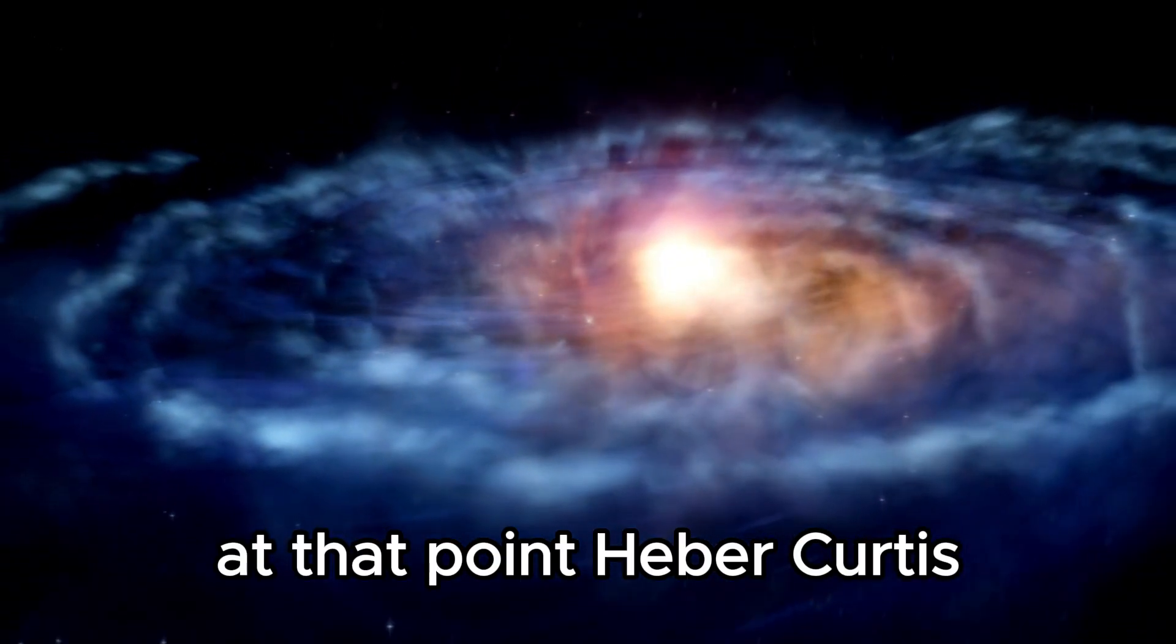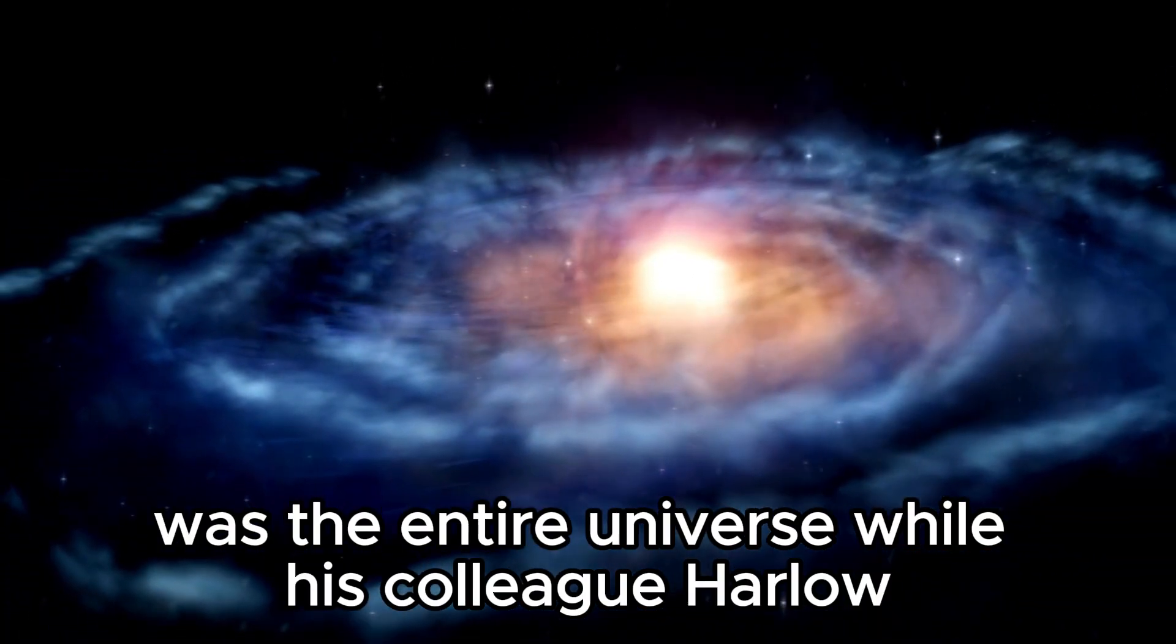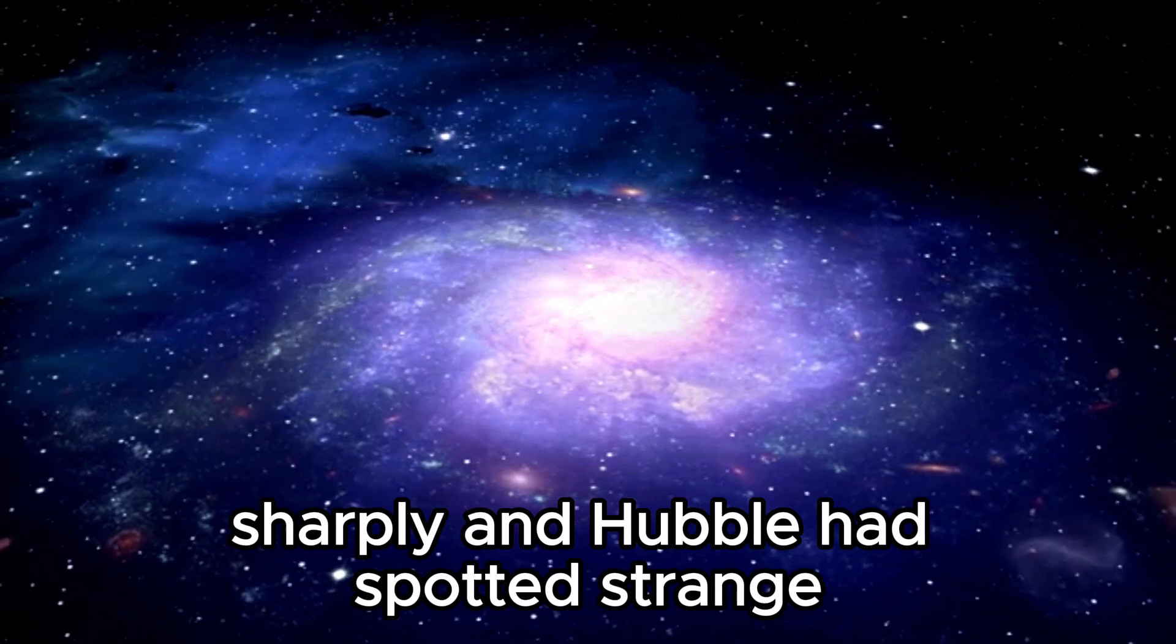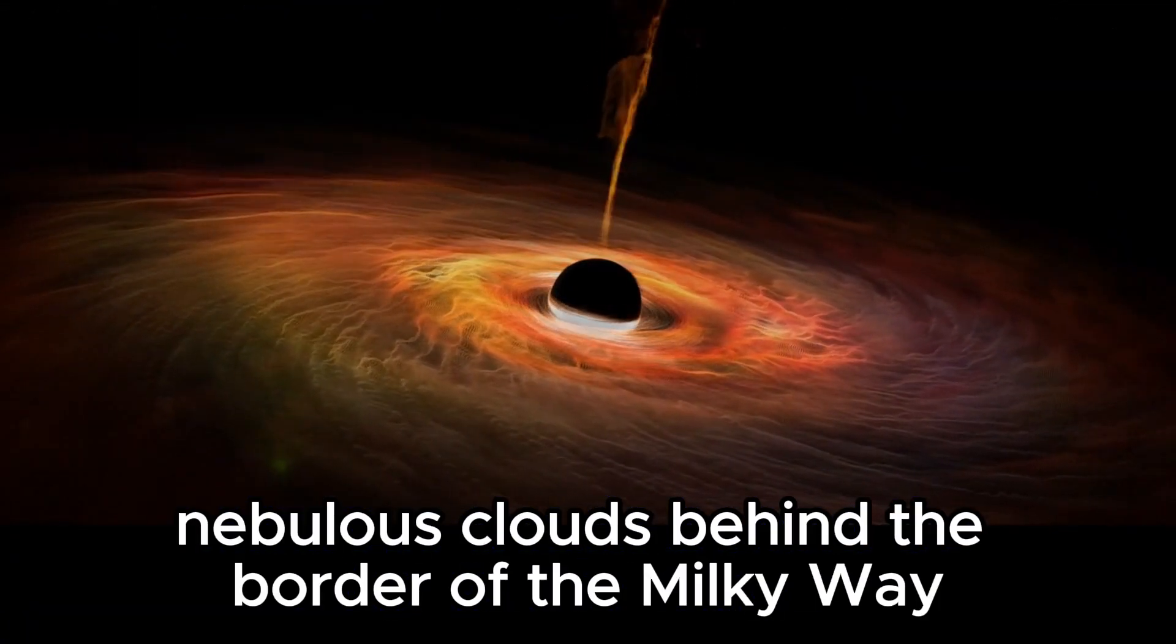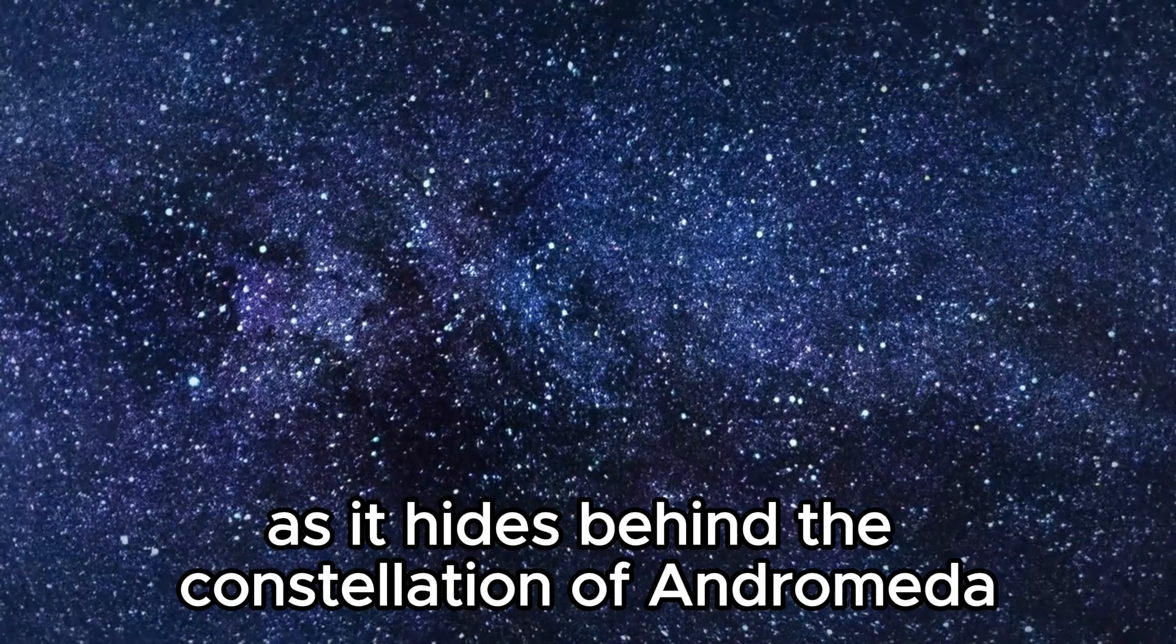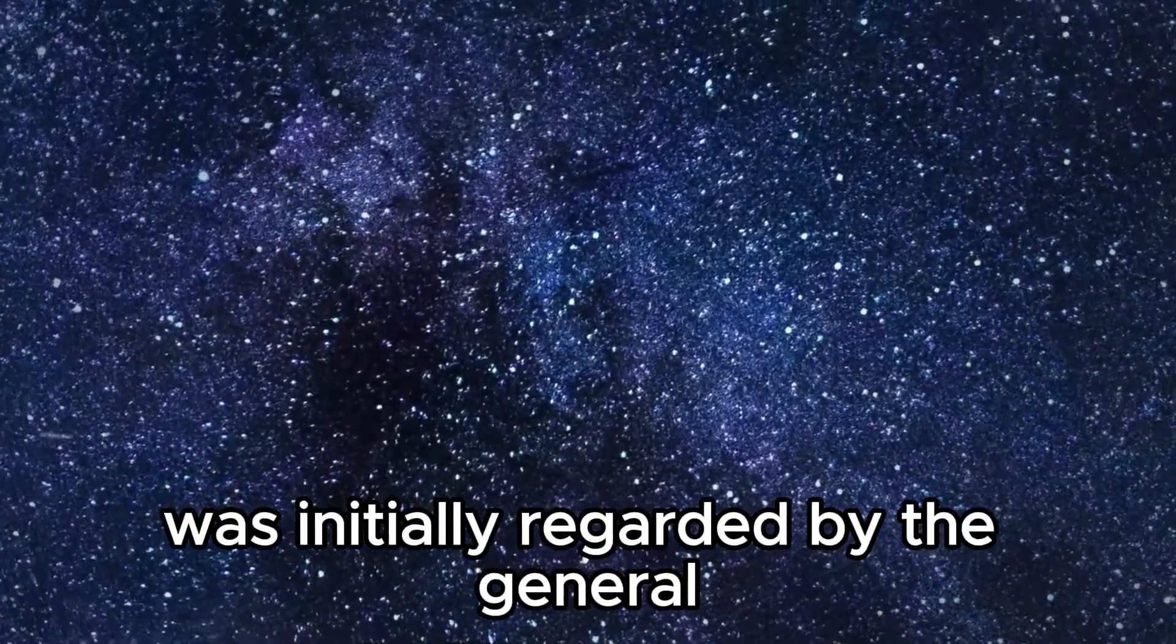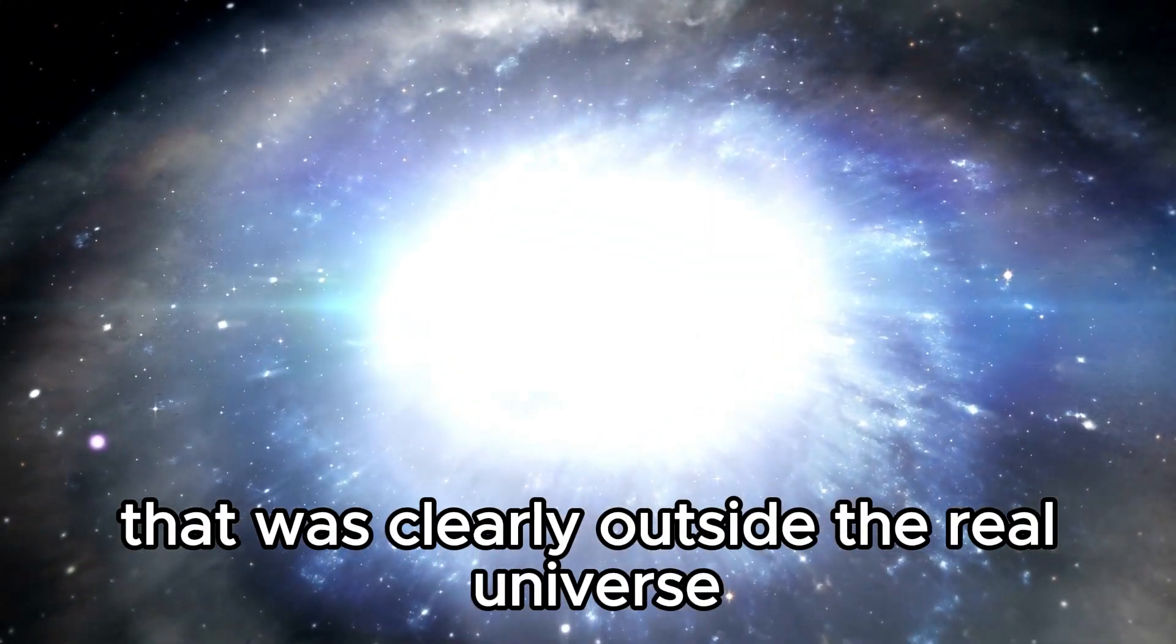At that point, Heber Curtis was one of the researchers who believed that the Milky Way was the entire universe, while his colleague Harlow Shapley suspected that there were other galaxies and that the universe was much larger. Shapley and Hubble had spotted strange nebulous clouds behind the border of the Milky Way. One of them was named the Andromeda Nebula, as it hides behind the constellation of Andromeda. At the time, Andromeda was initially regarded by the scientific community as a simple nebula.